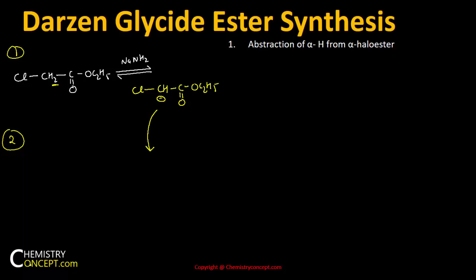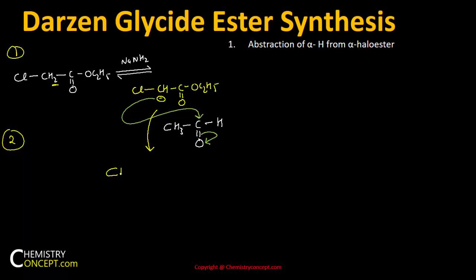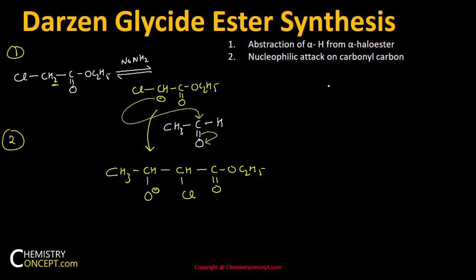The carbanion formed in the first step reacts with the carbonyl compound CH3-C(=O)H. This negatively charged carbon gets attached to the carbonyl carbon, and the double bond is shifted, resulting in formation of CH3-CH(O⁻)-CH(Cl)-C(=O)-O-C2H5. This was the second step: nucleophilic attack on the carbonyl carbon.